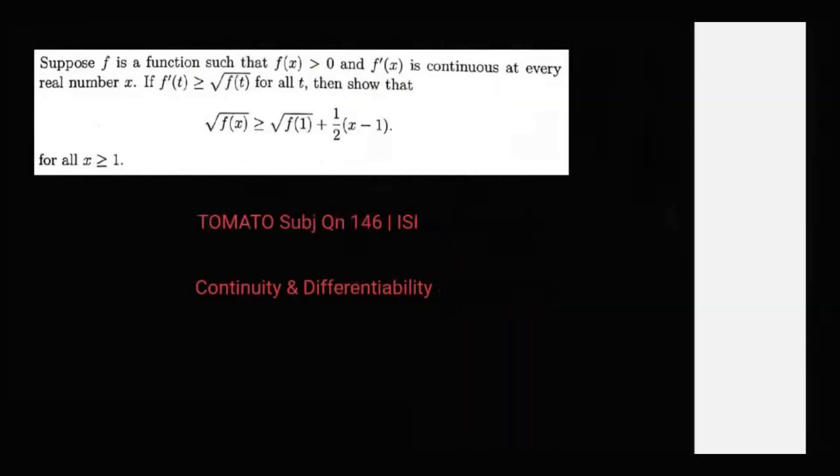Let's begin. We have F dash T is greater than or equal to square root of F T for all T belongs to real numbers. Since this is a positive quantity, this thing is always defined.